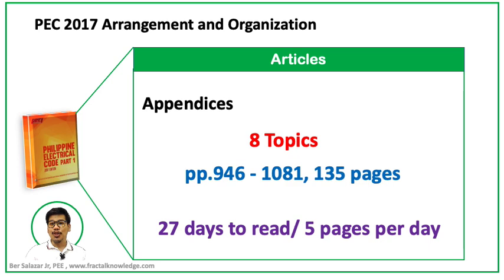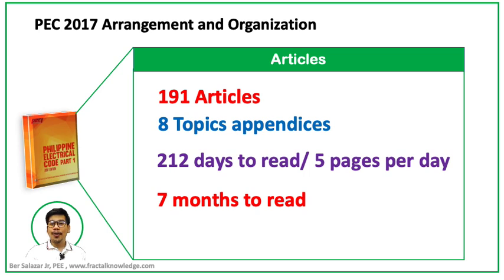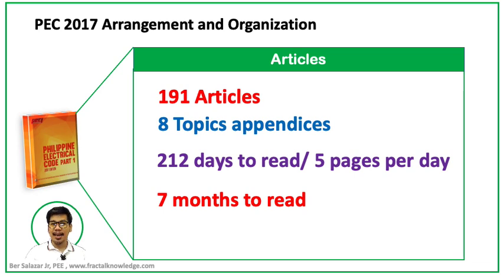The tables in Chapter 10 are for reference values — I didn't include them in my count but you need to spend time on them as well. Overall, including chapters 1 and 2 at 152 pages readable in 30 days, we can complete the Philippine Electrical Code in almost 212 days — or 7 months — reading 5 pages per day, including weekends. That is a great challenge, so you have to start now.